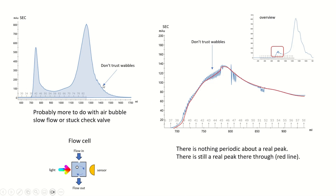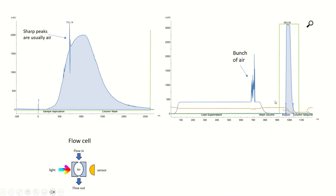Protein peaks never wobble — there's nothing periodic about them. So this isn't eight or nine different peaks coming off your protein run. This is an air bubble, a really tiny one floating around in the flow cell. Here's a more extreme example. You can also get really sharp peaks from air, and this is a classic problem in chromatography — air is the enemy. If you get one really sharp peak, that's just one big bubble going through your flow cell. If you get a bunch of peaks together, that's a whole lot of air coming off your column. If you have this, you might want to check your setup, make sure your column is fully equilibrated, and you might need to repack it. Air can completely ruin a chromatogram.